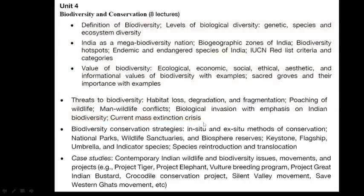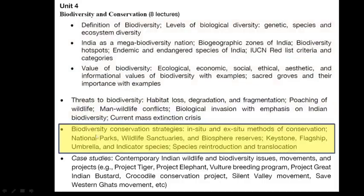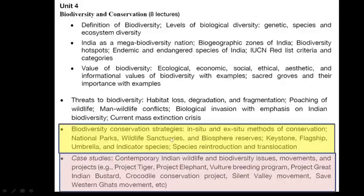So in this video, we are mainly focused on biodiversity conservation strategy — that means how we can protect different types of plants and animals, especially those for which population count is extremely low. We will also discuss examples where species have been protected by different methods. There are schemes in the country — for example, Project Tiger, Project Elephant, Vulture Breeding Program, Project Great Indian Bustard, Crocodile Conservation Project, Silent Valley Movement, etc.